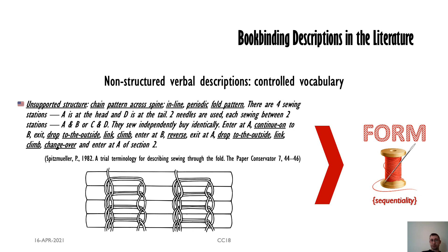A particular kind of formulaic verbal description had been attempted by Pamela Spitzmuller and Gary Frost, who used this to describe sewing structures. They used formulaic natural language descriptions in which most of the information was coded, relying on pre-established vocabularies and expressions. The results are actually compelling, and the form of the sewing structure seems to be fairly well conveyed — but I think this is successful thanks to the sequential natural information that follows the route of the thread as it moves around the sewing structure to sew the book. More complex structures that don't have such a defined sequentiality would make this communication rather blurry and imprecise.